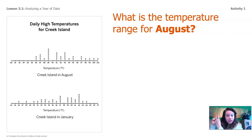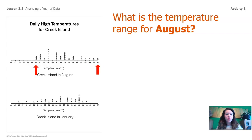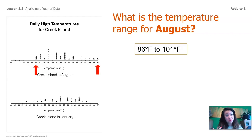Looking at this data, the data on the top gives us the Creek Island daily high temperatures in August, which you've already seen. So let's look at the temperature range for August. Do you remember how to find the range? You start by finding the lowest number and then the highest number. The range shows us the entire span of temperatures that happened at Creek Island in August. The range of temperatures for August is 86 degrees Fahrenheit to 101 degrees Fahrenheit. That's pretty warm. Now let's look at the weather data for January.